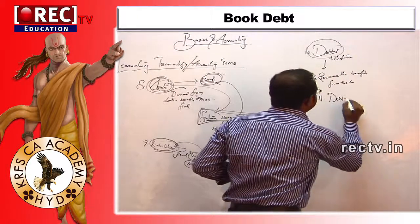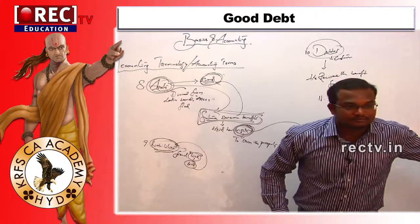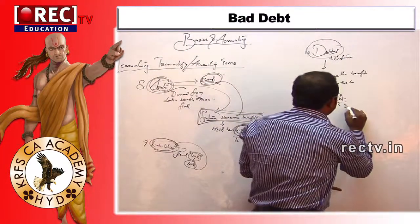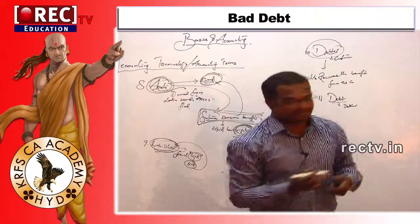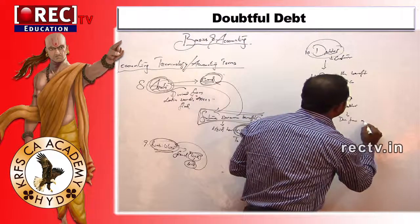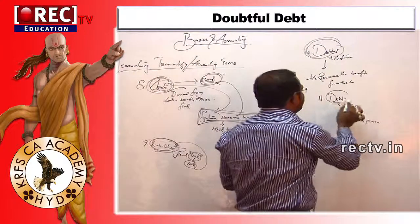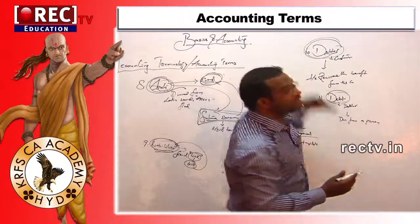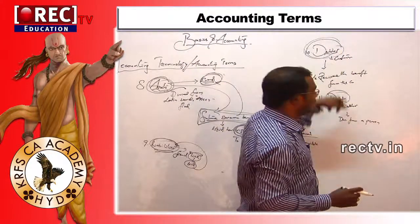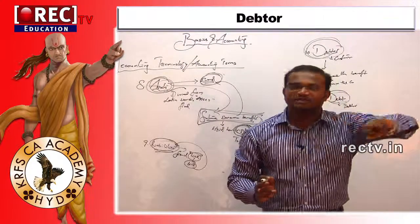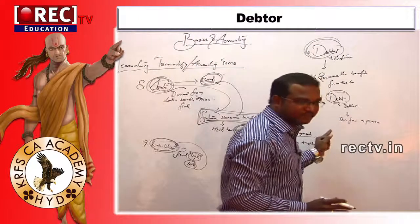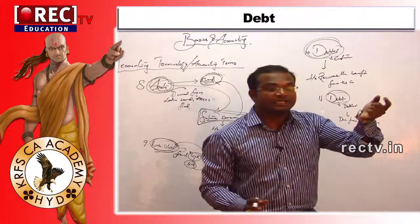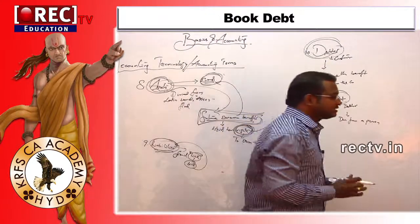What is meant by debtor? It is also called 'debt' — due from a person. In olden days they used the word 'debtor,' meaning due from a person. Later it became 'debt.' Both are the same — don't get confused. Debt and debtor both refer to the person who needs to pay the amount to the company.